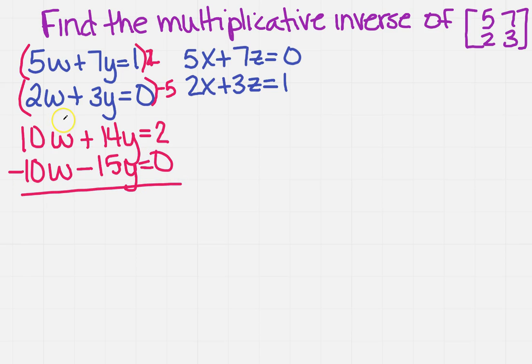So now I can add down, so the W's will cancel. That gives me minus Y equals 2, and Y will equal to minus 2.